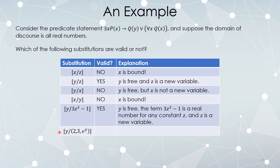Can I replace every instance of y with (2, 3, e to the y)? No — because (2, 3, e to the y) is not in our domain of discourse; it's not a real number, it's a triple of them. If our domain of discourse is all real numbers, the only thing you can substitute in is other real numbers or terms that represent them. 3z squared minus 1 represents a real number, but a triple is just not a number.